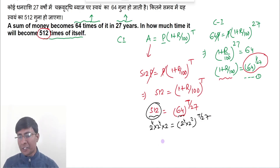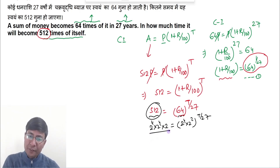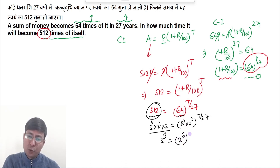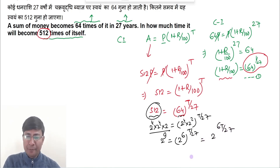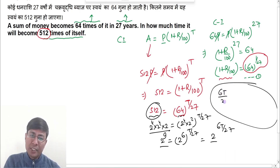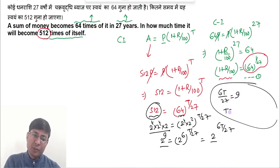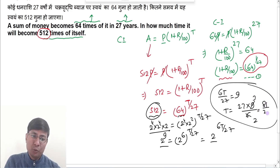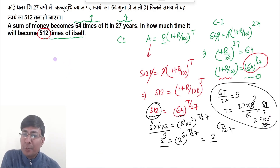So the left-hand side is 2^9 and the right-hand side is 2^(6T/27), which is 2^(6T/27). Since the bases are equal, the powers must also be equal: 6T/27 = 9. Therefore T = (27 × 9) / 6 = 81/2 = 40.5 years.